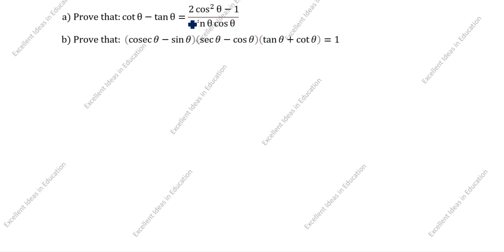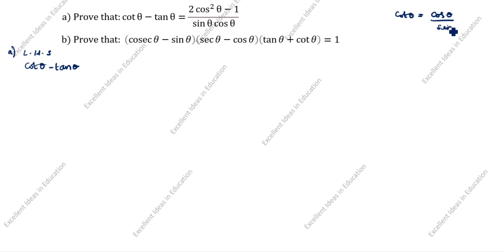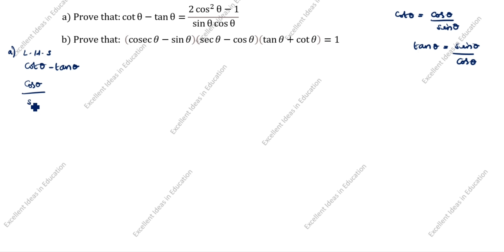First we will take LHS. LHS is given as cot θ minus tan θ. What is the formula of cot θ? Cot θ is equal to cos θ divided by sin θ. What is the tan θ formula? Tan θ is equal to sin θ divided by cos θ. Now we will split as per this formula: cot θ we will write as cos θ divided by sin θ, minus sin θ divided by cos θ.